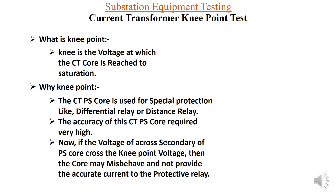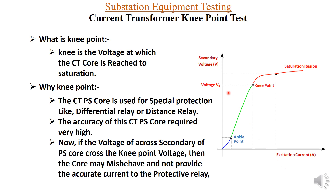The graph shows secondary voltage versus excitation current. As you can see, this kind of graph is obtained, and this point is called the knee point, with the voltage here called the knee point voltage. Beyond this, if the voltage is increased, the excitation current increases very fast and becomes very high. This region is called the saturation region, and the high excitation current can damage the core of the CT.